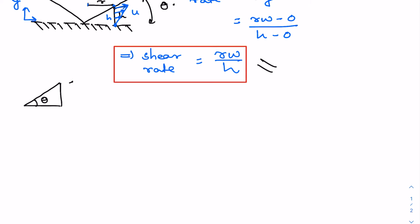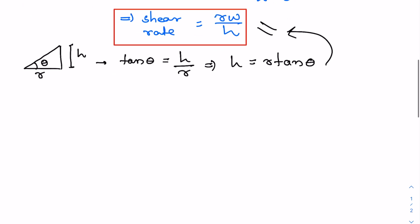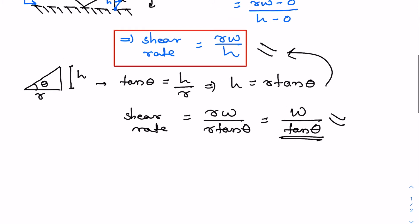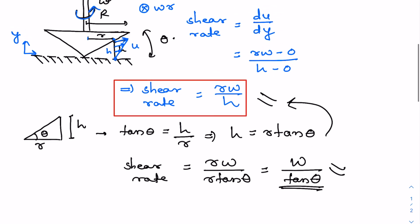Substituting h = r·tan(theta) into the shear rate expression, we get shear rate = r·omega / (r·tan(theta)) = omega / tan(theta). This is the expression for shear rate in terms of the given variables, and shear rate is nothing but the velocity gradient.